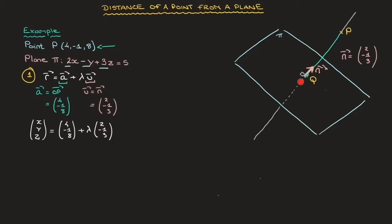Moving on to Step 2, we need to find the actual coordinates of point Q — the point of intersection of the line with the plane pi. To do this, we rewrite the line equation in parametric form, giving three equations: x = 4 + 2λ, y = -1 - λ, and z = 8 + 3λ.